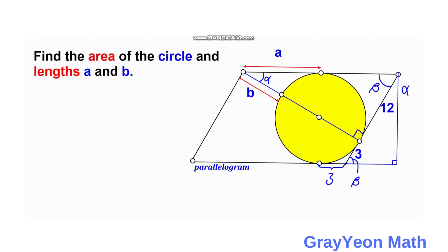Notice that if you have a length of 12 here, this length is actually a tangent from this circle, and this length is also tangent to the circle at this point. They intersect at this point, so this length is also 12. We can draw a line from this point and see that this is really a point of tangency, so this distance is also 12.